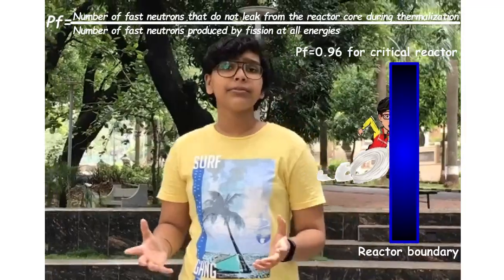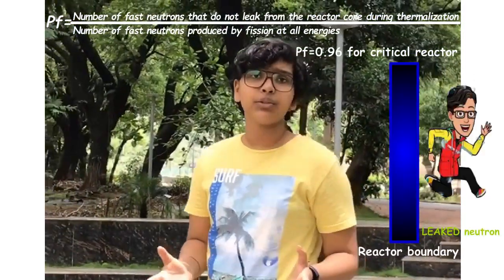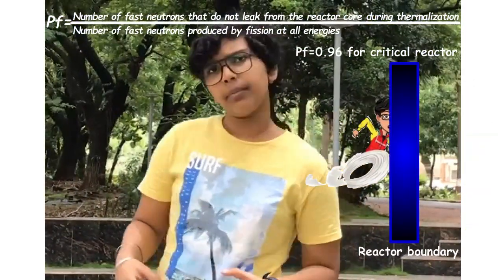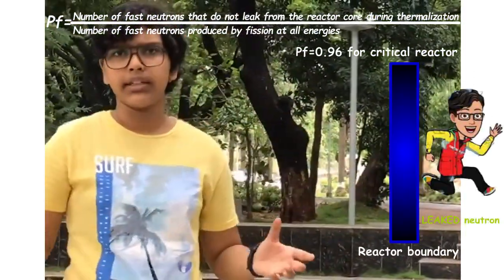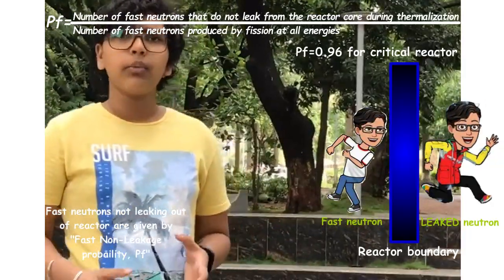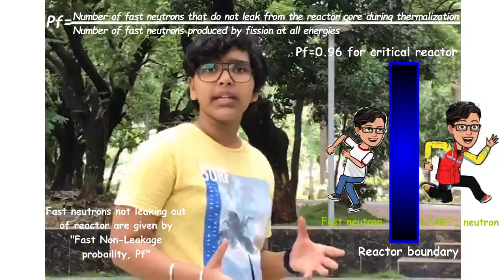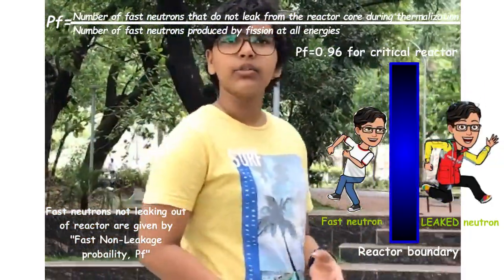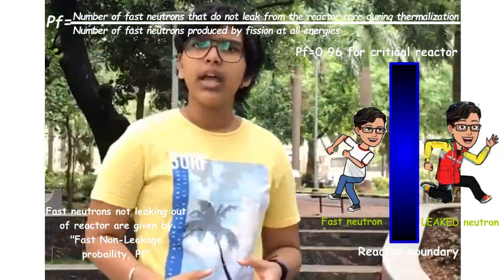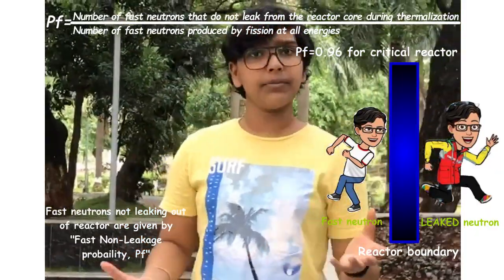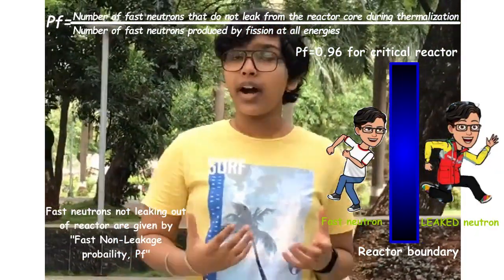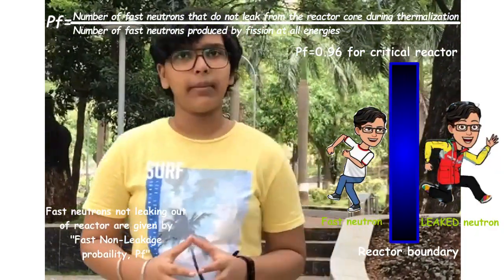The fast fission factor is fast neutrons produced by fission at all energies divided by fast neutrons produced in thermal fission. Some fast neutrons can escape out of the reactor, so whatever fast neutrons remain in the reactor are accounted for by the second factor, fast non-leakage probability.